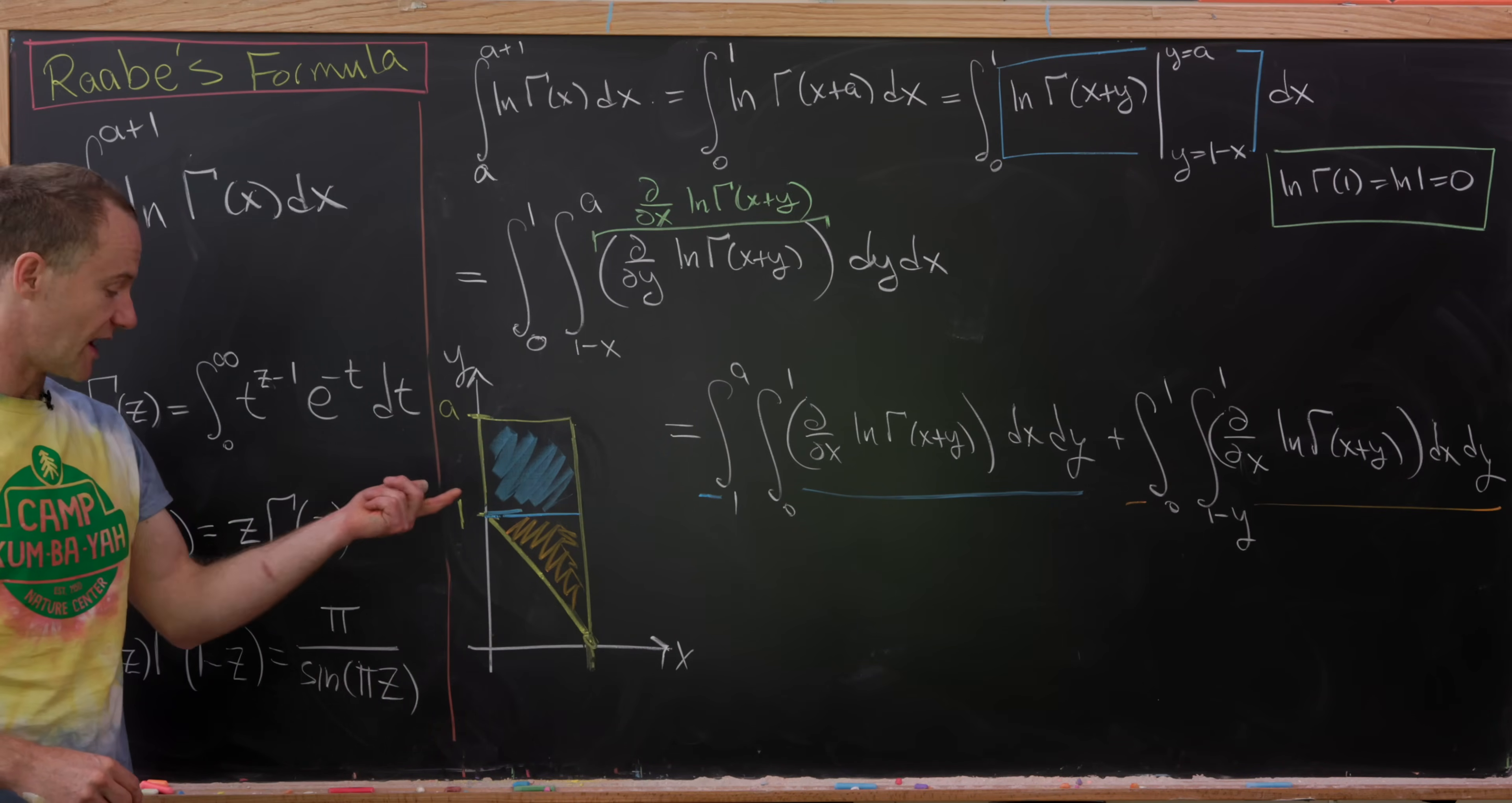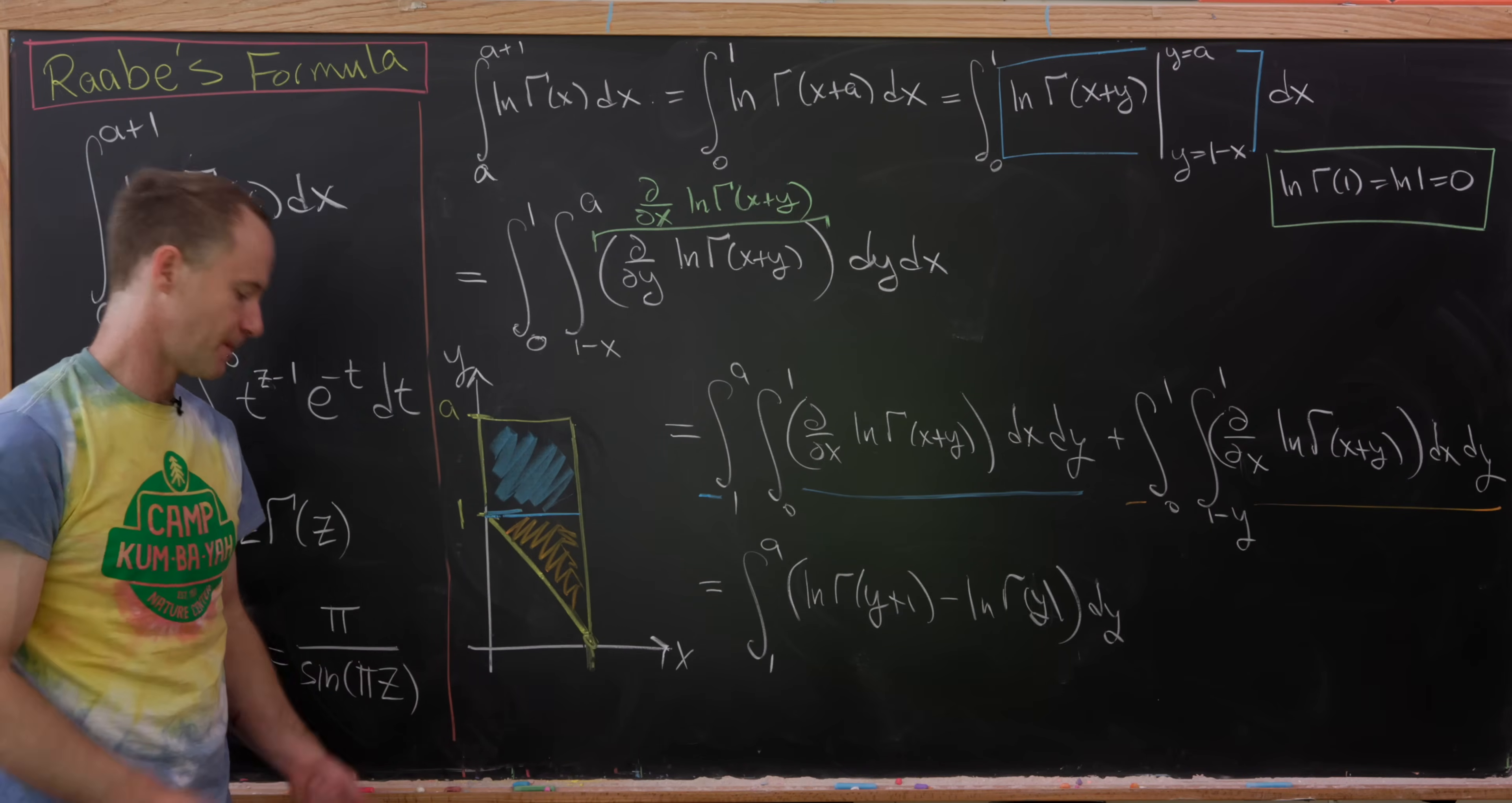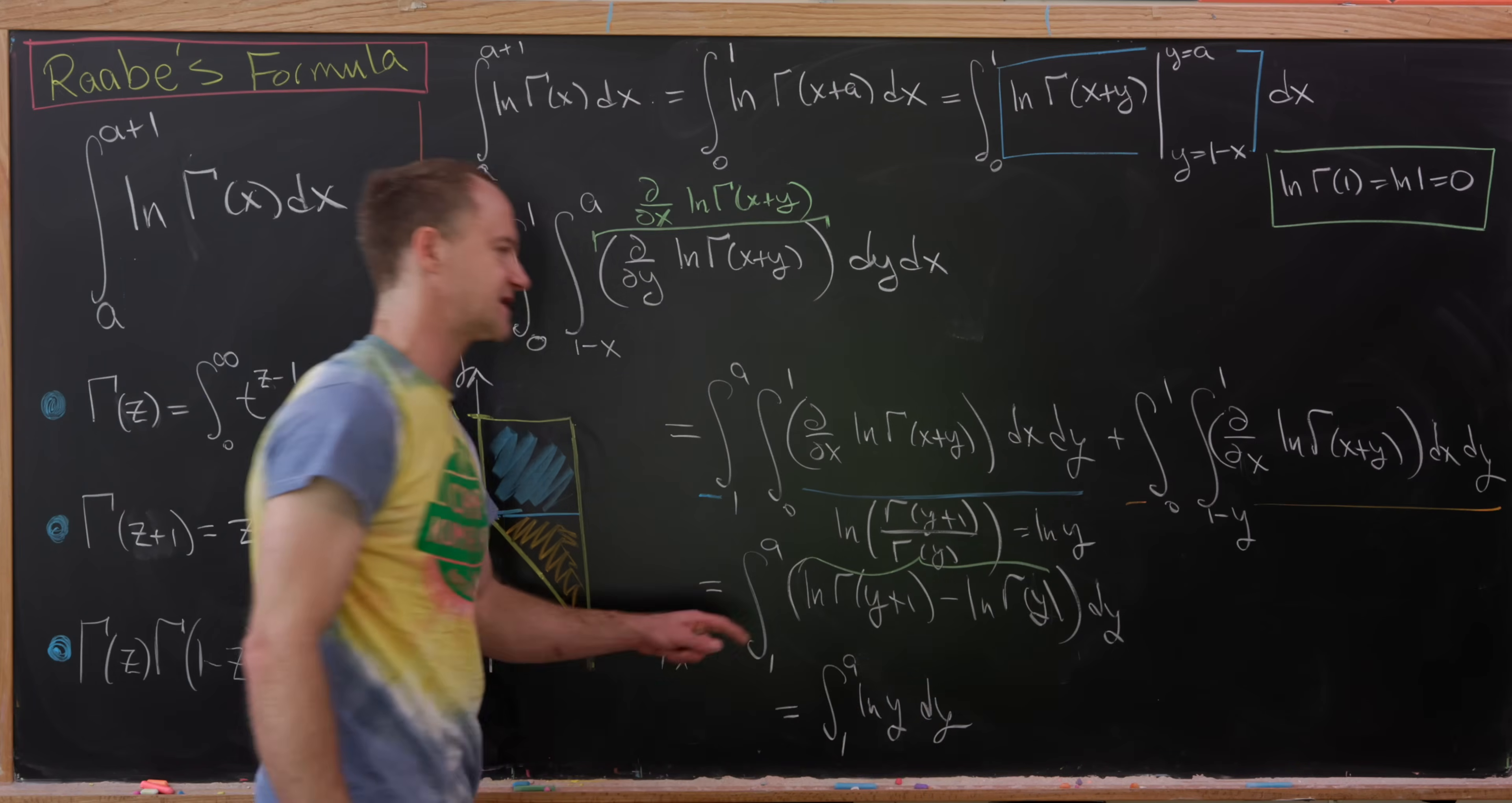So now we can apply the fundamental theorem of calculus to the inside. But this is quite easy because we've got a partial with respect to x in both cases. So this will give us the integral from 1 up to a. So that'll end up giving us the log of gamma of y plus 1 minus the log of the gamma of y dy. So again, that's just by applying FTC to that stuff in there. But next up, let's notice that we can use logarithm rules to turn this into the log of gamma of y plus 1 over gamma of y, and then apply our second rule over here to rewrite this as the log of y. So in fact, this first integral is simply the integral from 1 to a of the log of y dy.